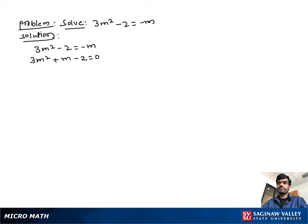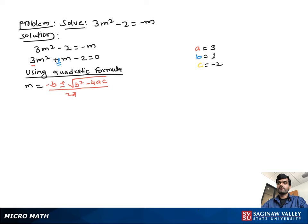Now determine the values of a, b, and c: a equal to 3, b equal to 1, and c equal to negative 2. Now using the quadratic formula: m equal to negative b plus or minus square root of b squared minus 4ac, all over 2a.